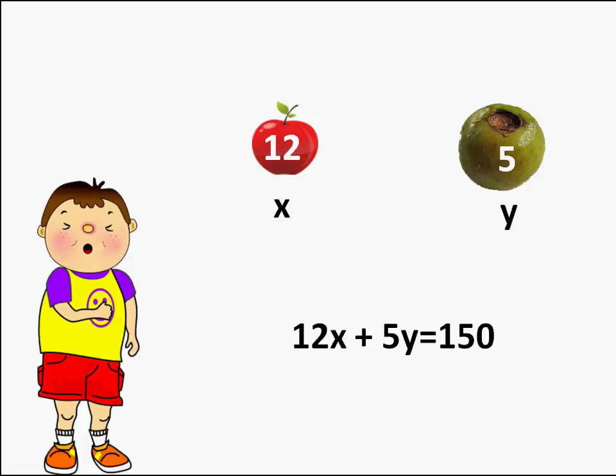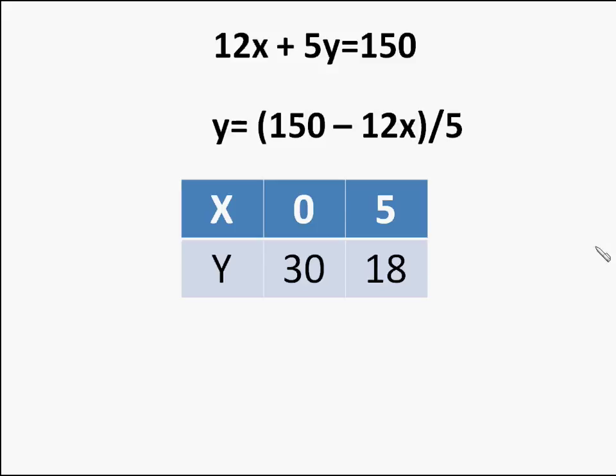So we need to solve this linear equation which has two variables. How do we solve it? We take different values of x and try to find the value of y. For that we rewrite the equation in the form of y equal to something.